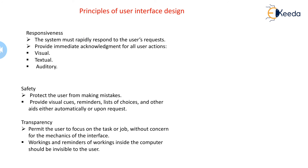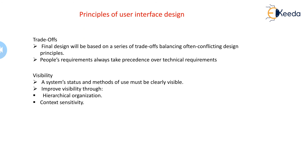Then there is transparency, which concerns how information is displayed. Never force the user to think about the technical details of the system — thoughts must be directed to the task, not the computer communication process. Then there is trade-off: design guidelines often cover a great deal of territory and often conflict with one another or with technical requirements. In such conflicts, the designer must weigh the alternatives and reach a decision based on accuracy, time, cost, and ease. Human requirements always take precedence over technical requirements.